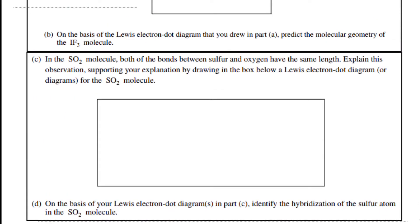Okay, in C, it says, in the SO2 molecule, both of the bonds between sulfur and oxygen have the same length. Explain this observation, supporting your explanation by drawing in the box below a Lewis electron dot diagram for the SO2 molecule.